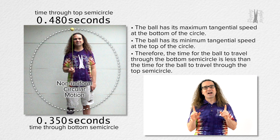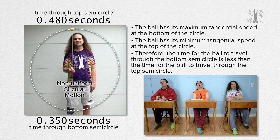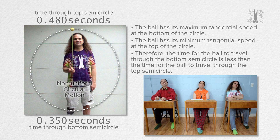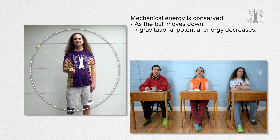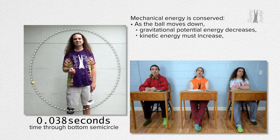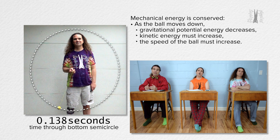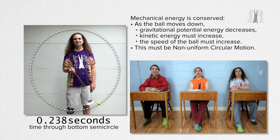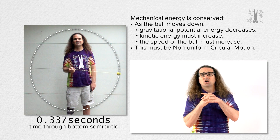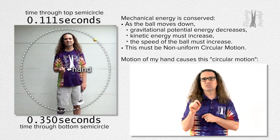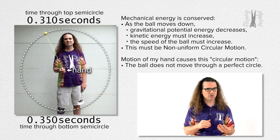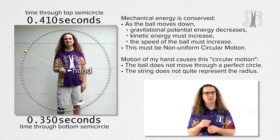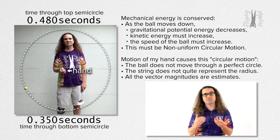We could also use conservation of mechanical energy to show this must be non-uniform circular motion. Because mechanical energy is conserved as the ball moves through the circle, as the ball moves down, gravitational potential energy decreases, so kinetic energy must increase. Therefore the speed of the ball must increase and the ball must be moving in non-uniform circular motion. I do want to point out that because the motion of my hand moving in a small circle causes this ball to move in non-uniform circular motion, the ball does not quite move through a perfect circle, the string does not quite represent the radius, and all magnitudes of vectors shown today are only estimates of the real values.